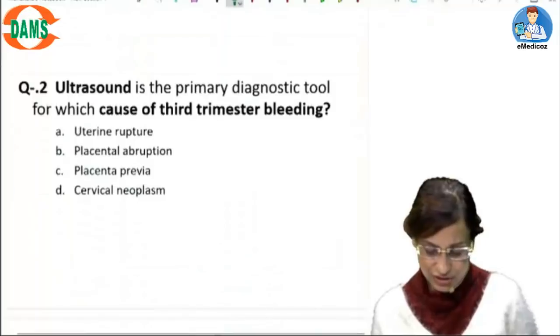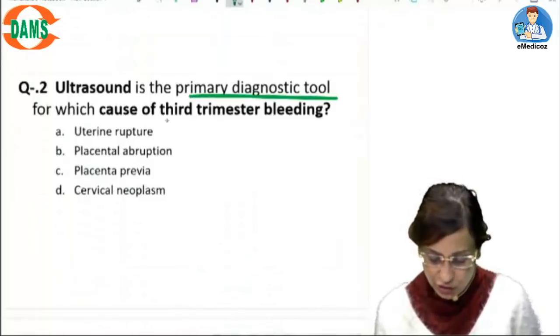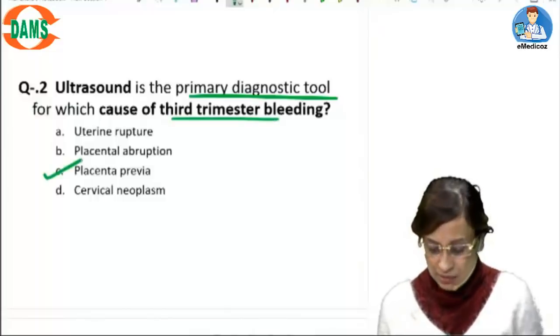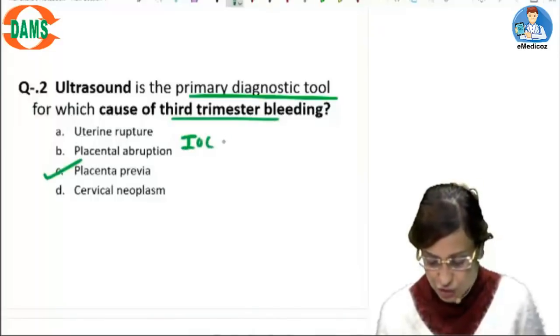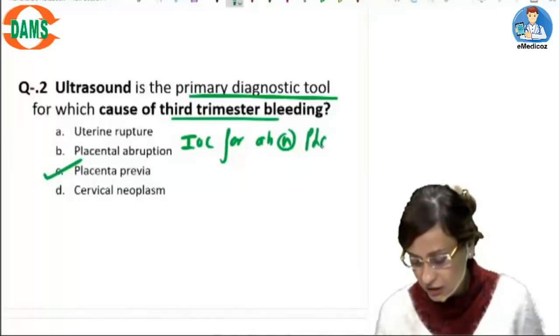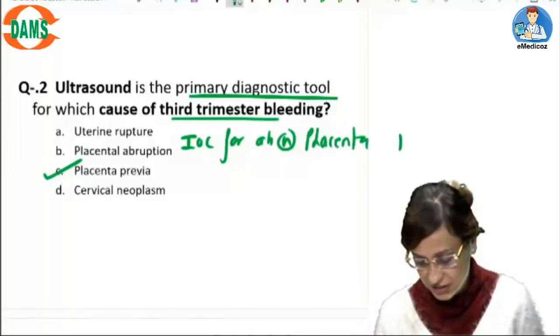Let's look at the next question. Ultrasound is the primary diagnostic tool for which cause of third trimester bleeding? It is placenta previa. Please remember the investigation of choice for abnormally located placenta is going to be TVS.